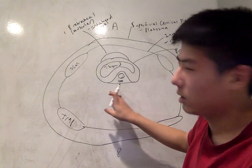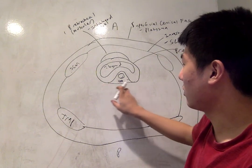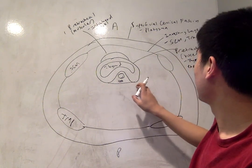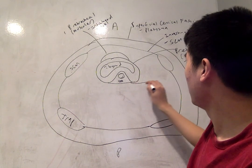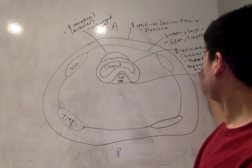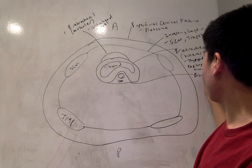And then I just want to make a note that the layer of fascia in the very posterior aspect of the pre-tracheal layer here is actually called the buccal pharyngeal fascia. And that will become important later.